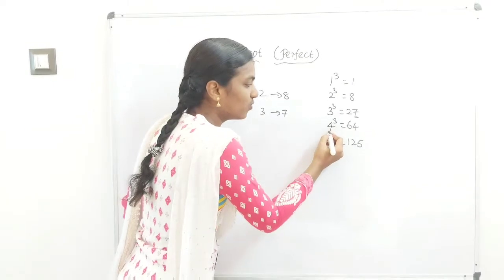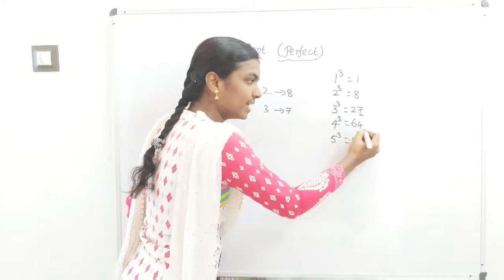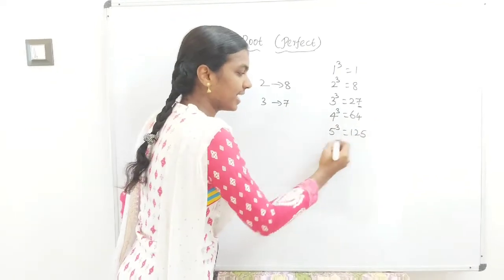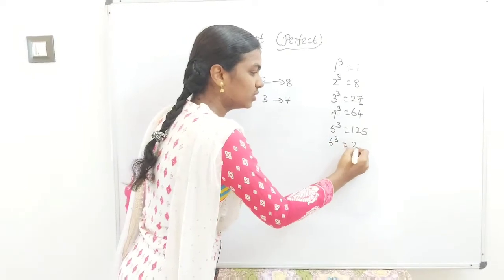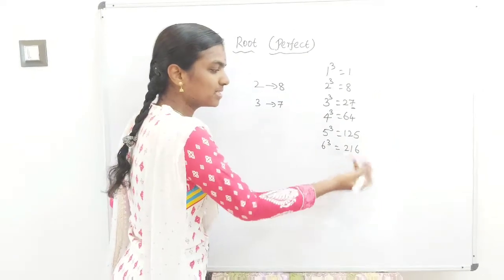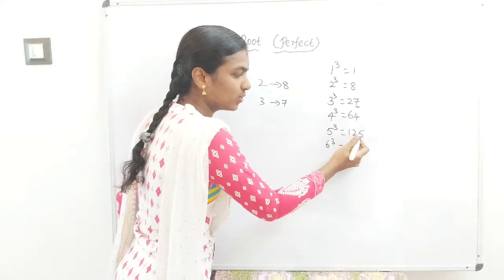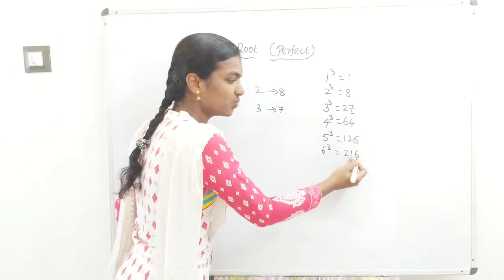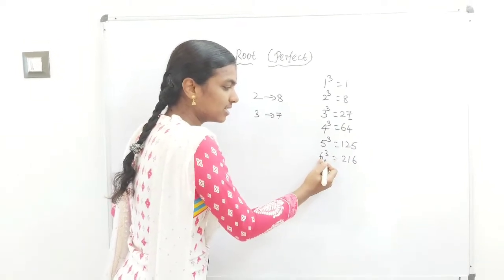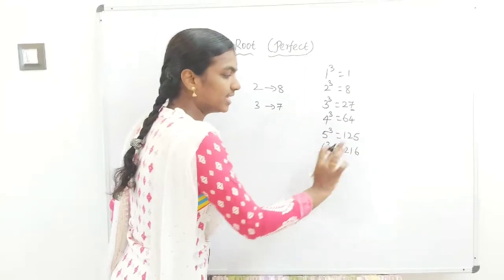Now 4 means ending with 4, 5 means 5. 6³=216 - to remember, 6 cube equals 216 where 1,2 appears, so reversed it's 2,1,6. Six cube means the last digit is also 6.